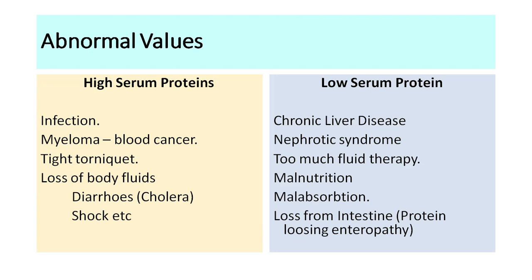Serum proteins are high during infection due to an increase in immunoglobulins. In a rare blood cancer called multiple myeloma, immunoglobulins are also increased, with serum proteins going up to 10 to 12 grams per deciliter. If the tourniquet is tied too tightly and for too long during blood collection, we can falsely get high protein levels. When there is significant loss of body fluids — as in cholera or shock — fluids escape from blood vessels but proteins, being larger molecules, remain, making total proteins appear high.